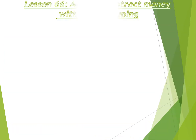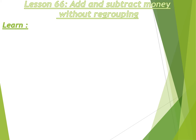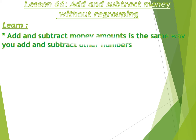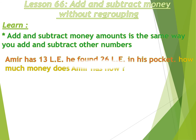Lesson number 66: add and subtract money without regrouping. We add and subtract money amounts the same way we add and subtract other numbers. Amir has 13 pounds and he found 26 pounds in his pocket. How much money does Amir have now? 13 plus 26: 3 plus 6 equals 9, 1 plus 2 equals 3.